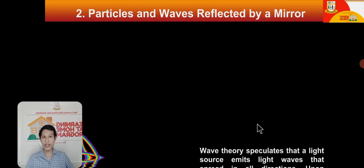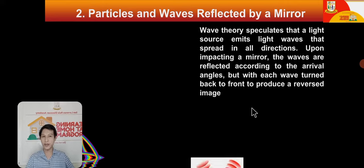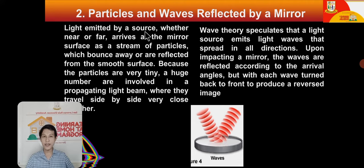Next, reflection through a mirror. Wave theory speculates that a light source emits light waves that spread in all directions; upon impacting a mirror, the waves are reflected at the arrival angles but with each wave turned back to front to produce a reverse image. For particle theory, light emitted by a source arrives at a mirror surface as a stream of particles which bounce away or are reflected from the smooth surface. Because the particles are very tiny, a huge number are involved in propagating a light beam, traveling side by side close to each other.